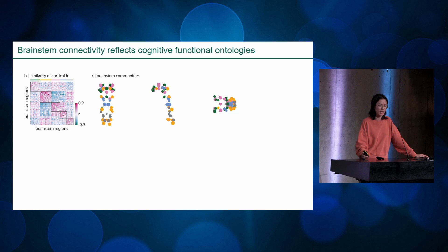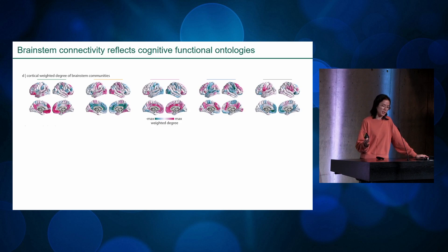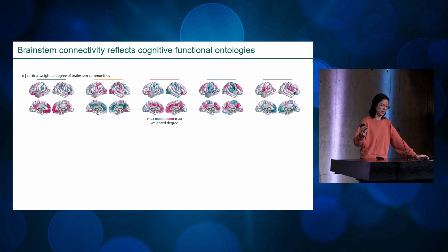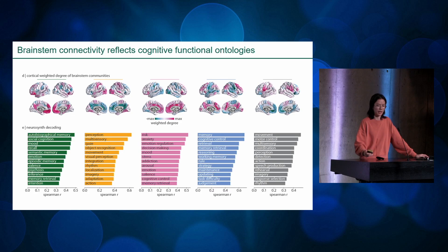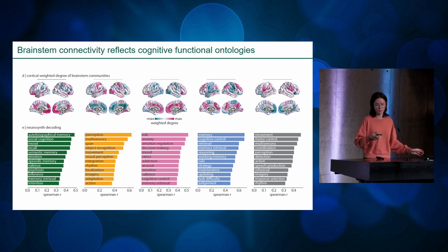The five modules are spatially segregated. For each, I looked at the cortical projection pattern. These cortical activity patterns are all super recognizable — you can see somatomotor regions, limbic regions, and transmodal regions involved in memory. For a more quantitative view, I did a cognitive decoding using the Neurosynth meta-analytic tool, correlating each cortical map with different brain maps related to cognitive functions. For example, the pink module — brainstem nuclei connected to the cortex in a pattern aligned with the limbic system — maps to terms like risk, anxiety, mood, and emotion regulation.